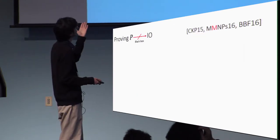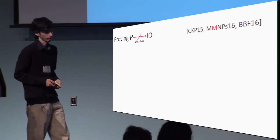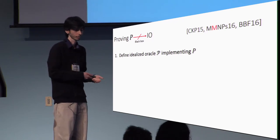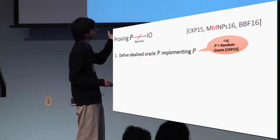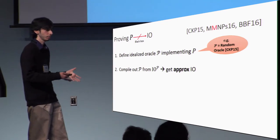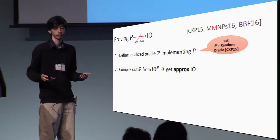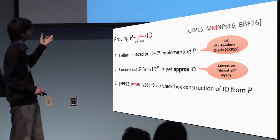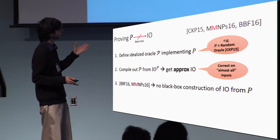Let's go over the general plan for ruling out a construction of I.O. from P in a blackbox way. The first step is to define an idealized oracle that securely realizes the primitive P — for example, in Kaneti et al., where they show I.O. cannot be based on one-way functions in a blackbox way, the idealized model is the random oracle. The second step is to compile out this idealized oracle from I.O. in the idealized model and get back an approximate I.O. in the plain model, where approximate means correct on almost all inputs. The third step uses the work of Brikersky, Bruschka, and Fleischhacker to conclude there is no blackbox construction of I.O. from P.